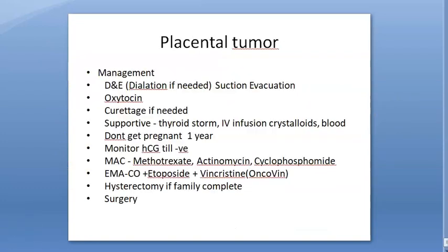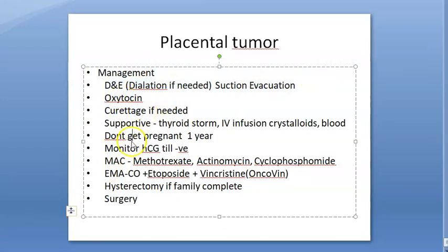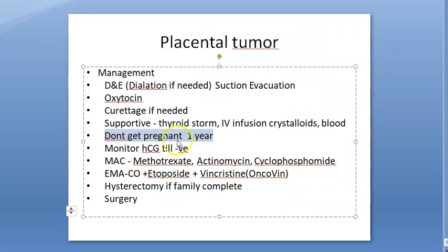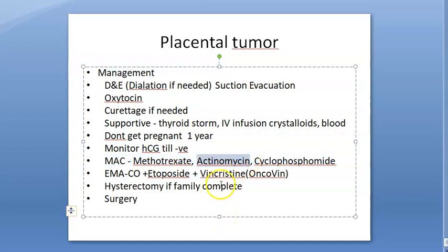Management of gestational trophoblastic disease includes suction evacuation, curettage if needed, correction of hyperthyroidism, and crystalloids or blood transfusion. Importantly, the patient must not get pregnant within one year so that rising beta-HCG can be monitored without confusion from a new pregnancy. Chemotherapy regimens include MAC (methotrexate, actinomycin D, cyclophosphamide) or EMACO (etoposide, methotrexate, actinomycin, cyclophosphamide, vincristine). Hysterectomy is done if the family is complete.